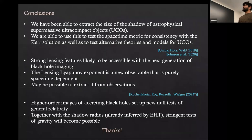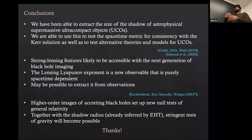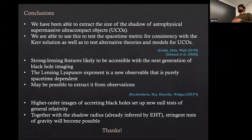So far we've been able to extract the size of the shadow for actual astrophysical objects like M87 or Sgr A*, and showed how to use these images to test different theoretical models. Now in the future, we want to look at strong lensing features with the next generation of black hole imaging — for example, the next generation Event Horizon Telescope — and try to extract the lensing Lyapunov exponent. We're not very far away from establishing this is possible. If we do get the Lyapunov exponent as well, then combined with the shadow size, we'll be able to place much stronger constraints.